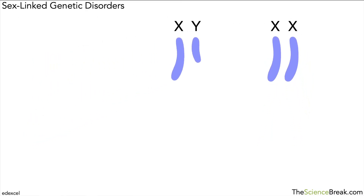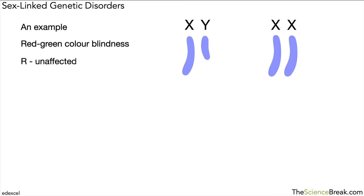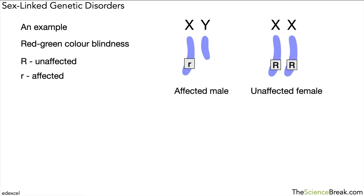Let's look at a real example: red-green color blindness, which is a sex-linked genetic disorder. We use capital 'R' for the unaffected allele and lowercase 'r' for affected. In this example, the male has a lowercase 'r' and the female has two capital 'R's. So on the left we have an affected male, and on the right we have an unaffected female.